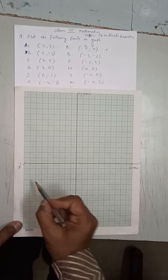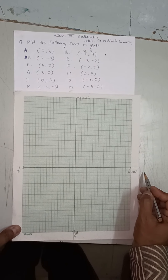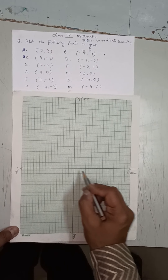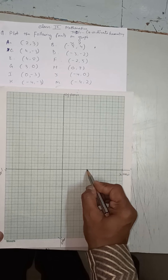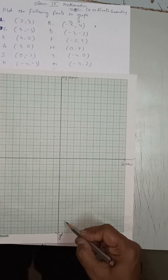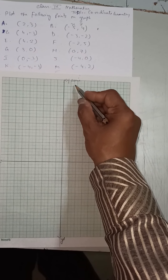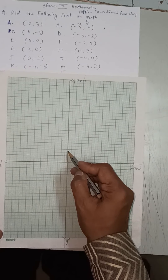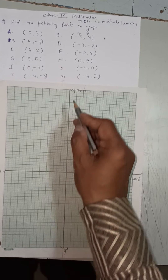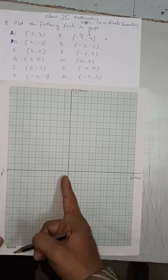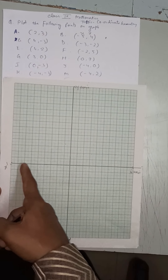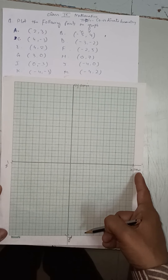First of all, we draw the x-axis and y-axis. The x-axis is the horizontal bold line drawn almost in the middle of the graph paper. The vertical bold line is the y-axis, also drawn through almost the middle of the graph paper.